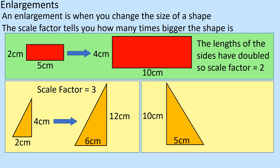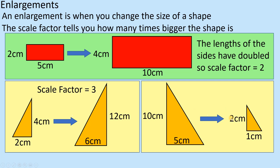Enlargements don't necessarily mean getting bigger. This last example is still an enlargement, but the scale factor is a fraction. It's gone from five to one and ten to two — it's divided by five. But because it's a scale factor, it's a multiplier, so I multiply by one fifth. When a shape gets smaller, the scale factor is going to be a fraction. This has a scale factor of one fifth — it's a fifth of the original.